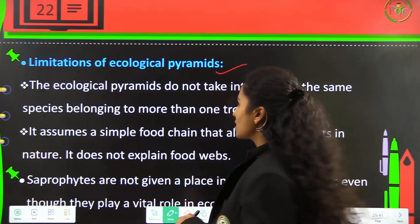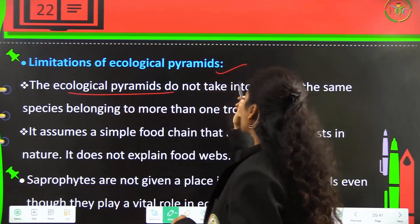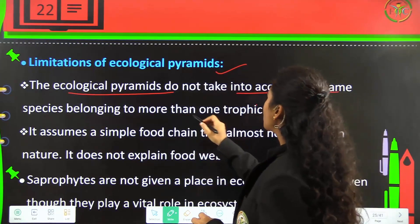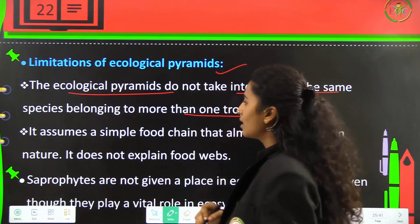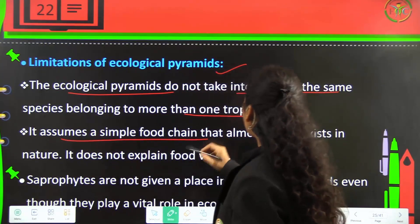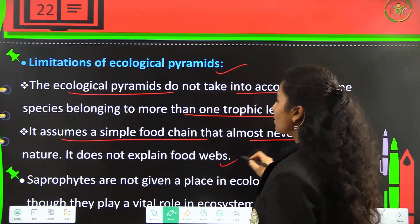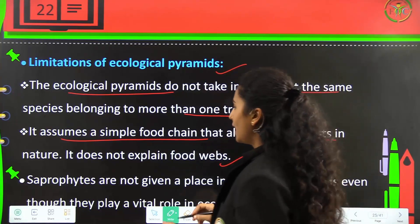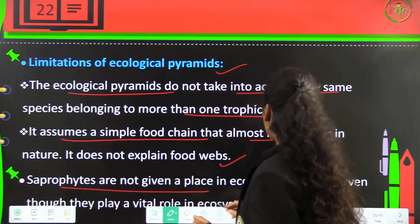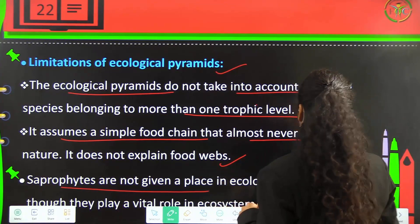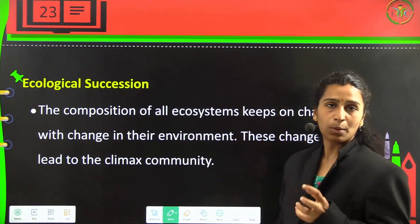Limitations of ecological pyramids: These do not take into account the same species belonging to more than one trophic level. They assume a simple food chain which almost never exists in nature. They do not explain food webs, and saprophytes are not given a place even though they play a role in decomposing.